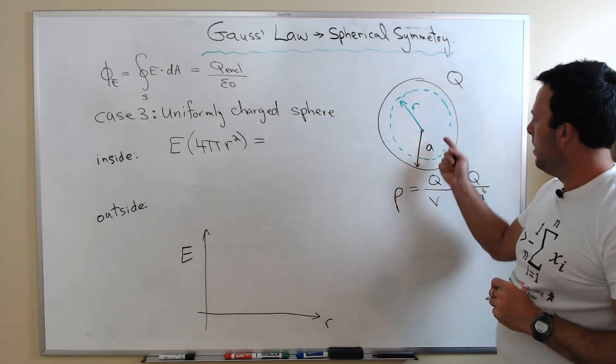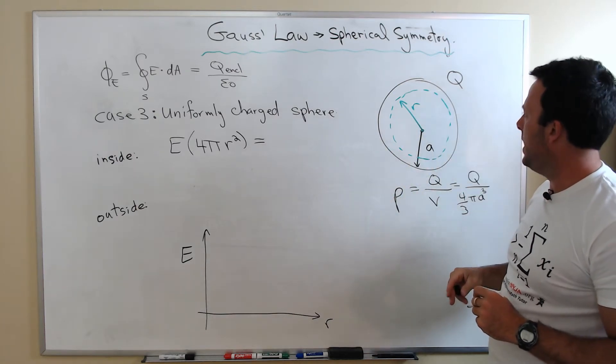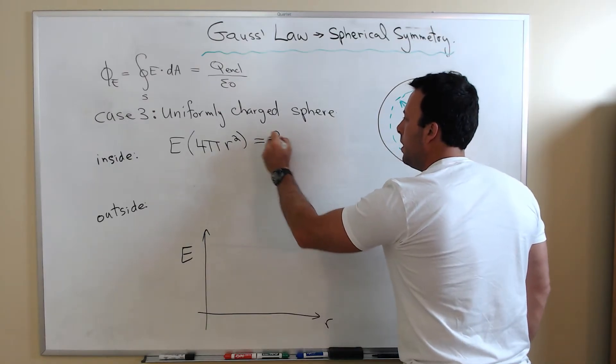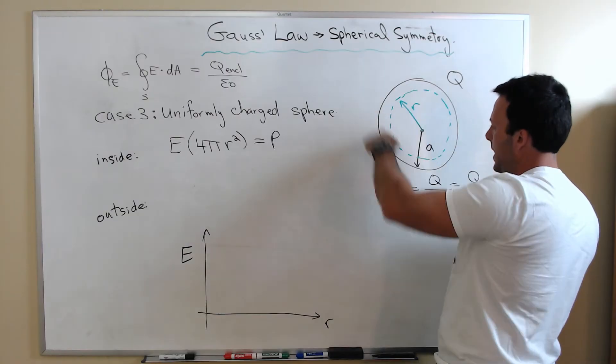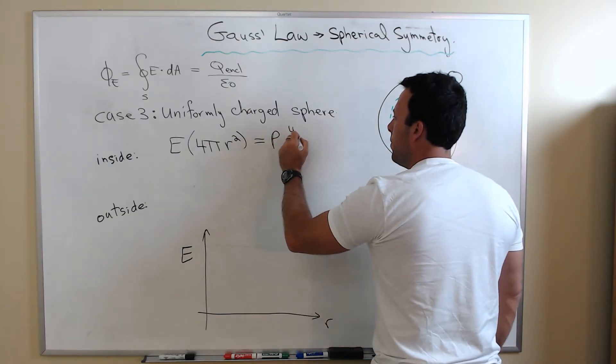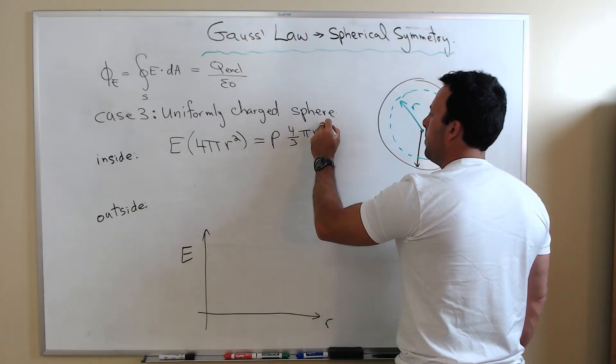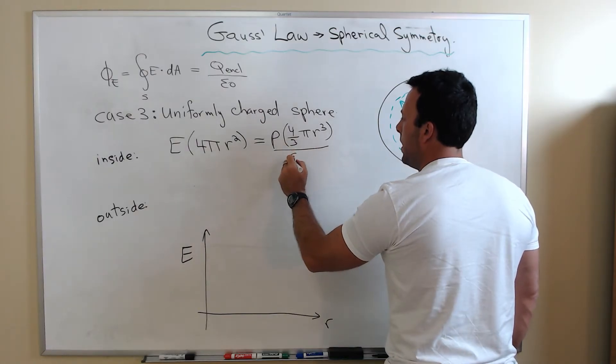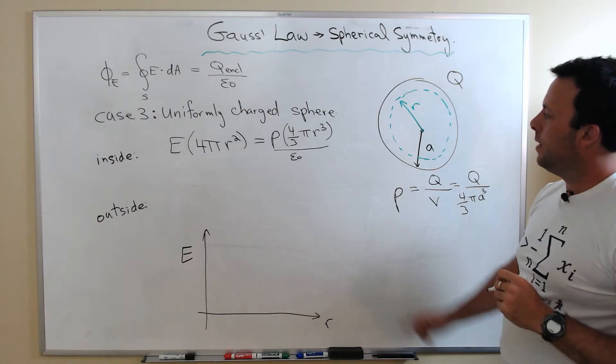That's going to be equal to the amount of charge enclosed by this green surface. How much charge do I have enclosed here? It's going to be the density times the volume. The volume of this green surface, not the black one, the volume of the green surface is four-thirds pi R cubed. To apply Gauss's Law, I also have to divide through by epsilon zero.